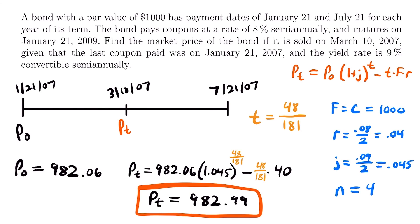In the grand scheme of things, you can see how little of a difference this actually is compared to the price at the previous coupon date. The price P sub 0 is $982.06, but the market price is $982.99 — a difference of less than a dollar. It's not a huge difference, but it is necessary to calculate nonetheless. That is all for this lesson on the market price of bonds. Feel free to check out our examples video linked at the end, leave questions in the comments, and I will see you next time.